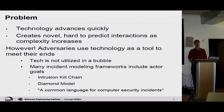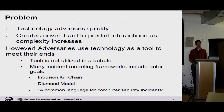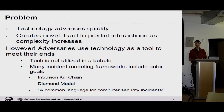Tech advances quickly, and in general new tech creates weird and complicated interactions that are hard to predict. But adversaries are using tech as a tool to meet their ends. So if we know what their ends are, we can probably get a better idea of what tech they're going to use. Because if the tech is on the internet and open source, and they want to get into your castle, they'll get into your castle.